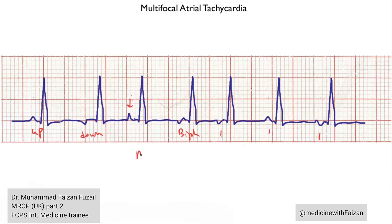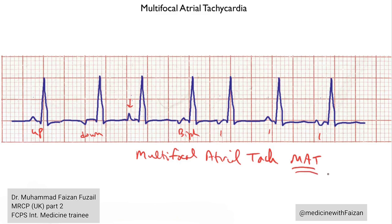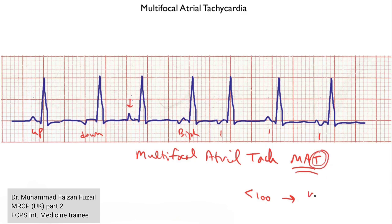MAT is commonly seen in people with lung disease, like bad COPD, who will often present with arrhythmias like MAT. Here it is drawn with a rate of around 120. But imagine seeing the same kind of arrhythmia with a rate less than 100 — then you wouldn't call it multifocal atrial tachycardia, since tachycardia means greater than 100. You would call it wandering atrial pacemaker.